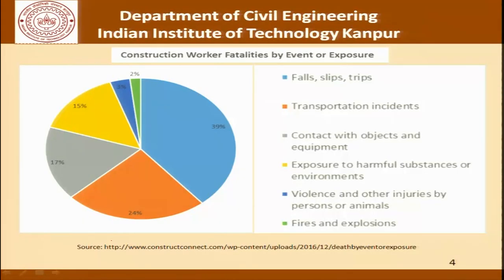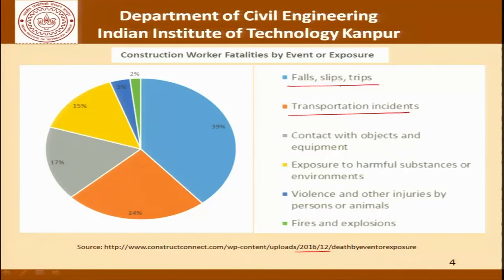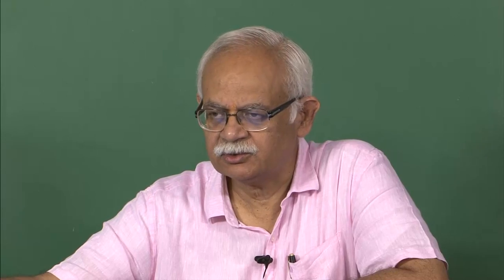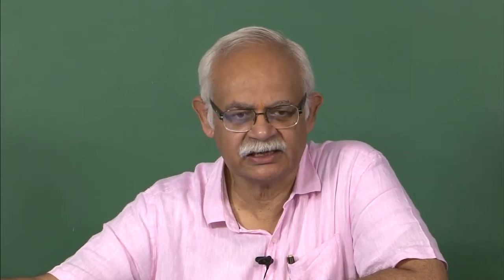Moving on to statistics relating to construction worker fatalities by events or exposure, this pie chart tells us the nature of accidents leading to fatalities at construction sites — data apparently for 2016. Categories include falls and slips, transportation-related accidents, contact with objects and equipment, exposure to harmful substances, violence, and fires and explosions. If we can address falls, transportation incidents, and contact with objects, we would cover more than 75 percent of construction worker fatalities — a very large number.